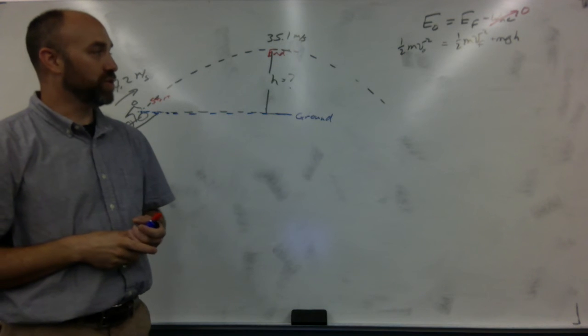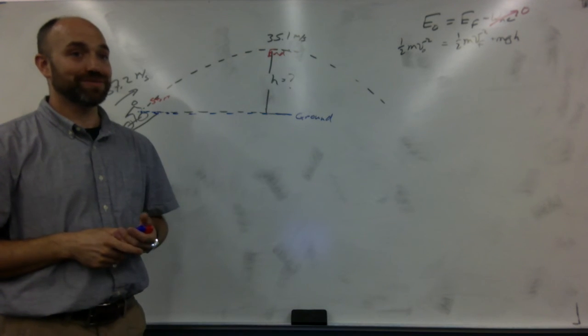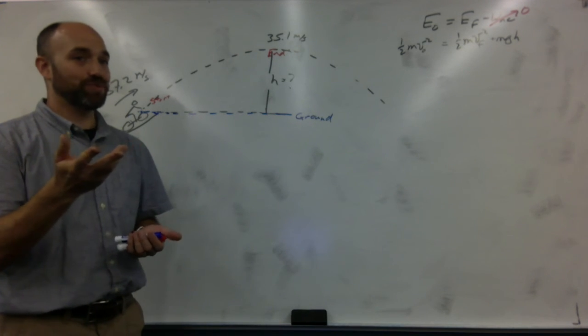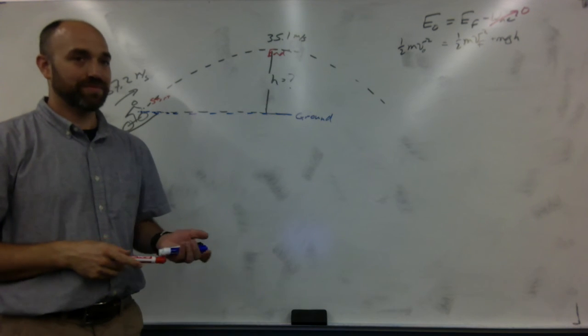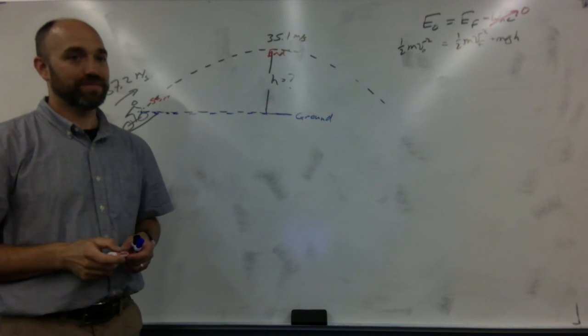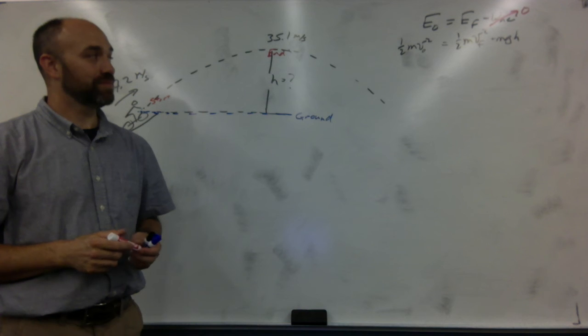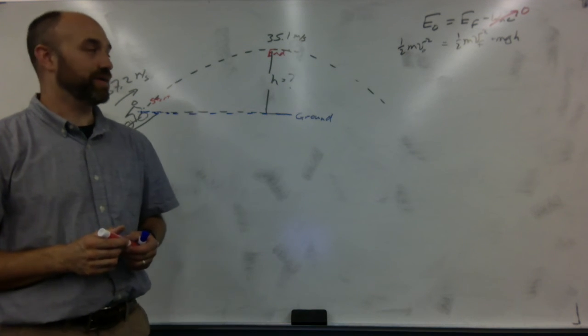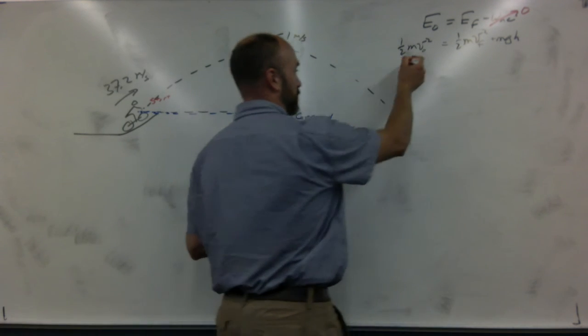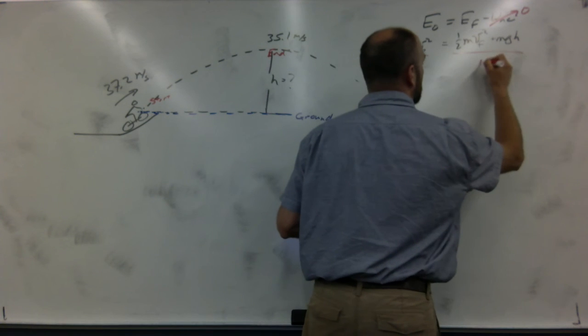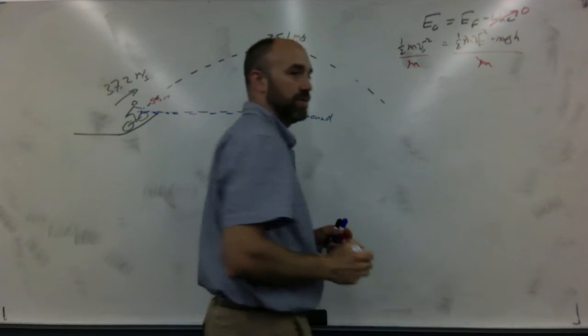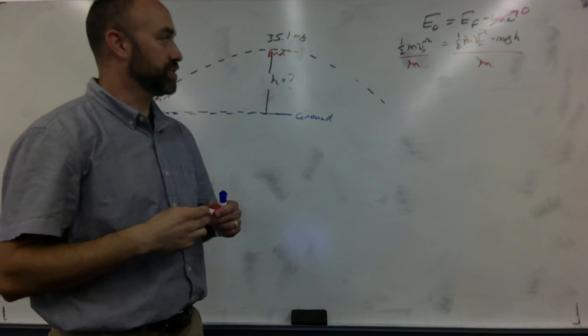So, now you know everything except H. And M. But what do you notice about M? You can cancel M. If you divide both sides by M, it just goes away. And now you solve it for H. And you never had to know an angle.